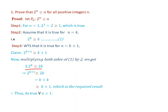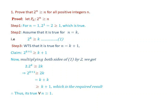This implies that 2 times 2 to the power of k is 2 to the power of k plus 1, which is greater than or equal to 2k. Since 2k is greater than or equal to k plus 1 (as k plus k is greater than or equal to k plus 1), therefore 2 to the power of k plus 1 is greater than or equal to k plus 1, which is the required result. It is true for every n greater than or equal to 1.